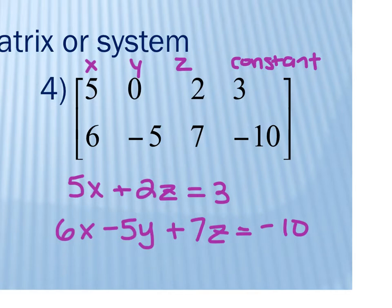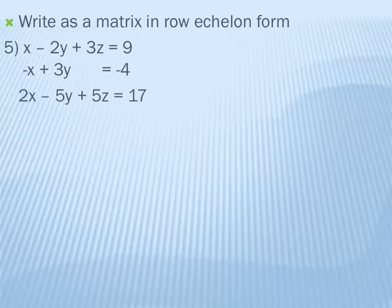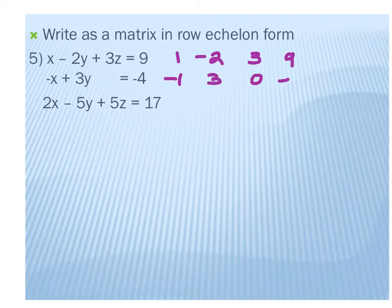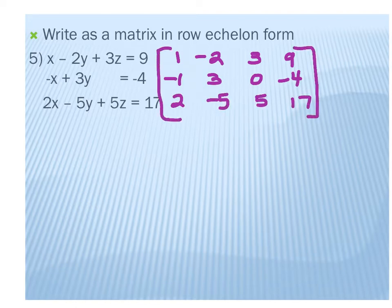I would not mark it wrong if you had a 0y, but you don't need it — we're going to use these to take the next step out of row echelon and reduced row echelon to solve the system. Any questions on 1 through 4? For number 5, we're writing the matrix in row echelon form. First, rewrite the system as the matrix: 1, negative 2, 3, 9; negative 1, 3, 0, negative 4; and 2, negative 5, 5, 17.